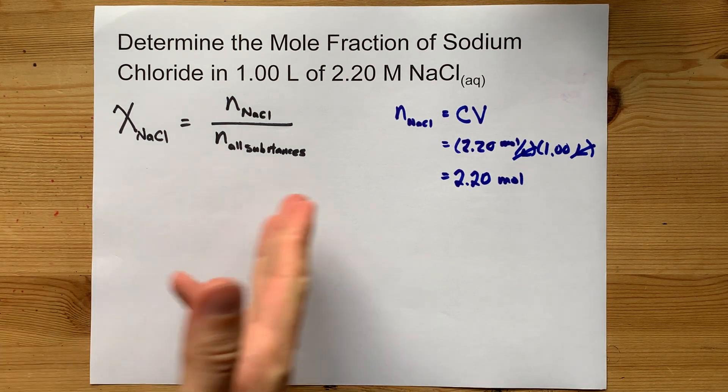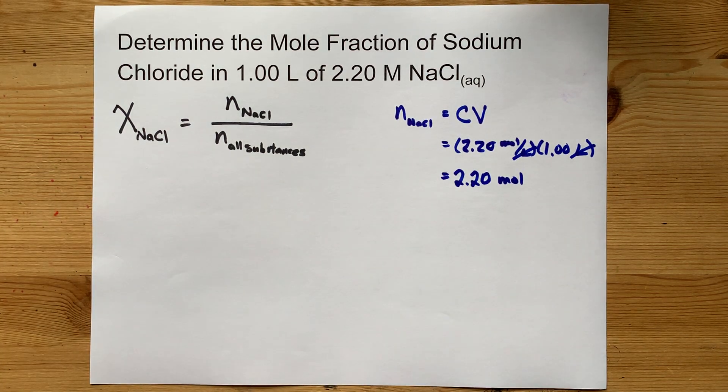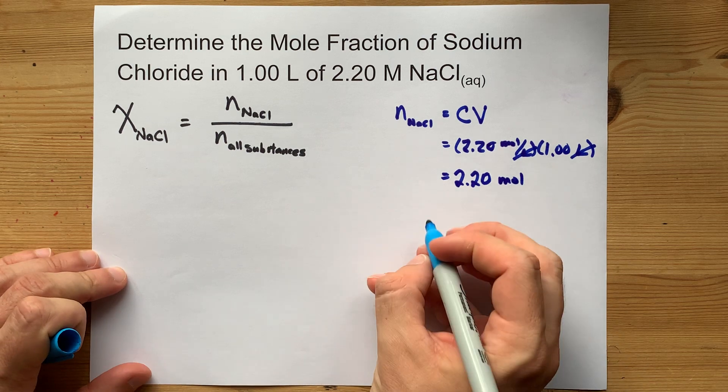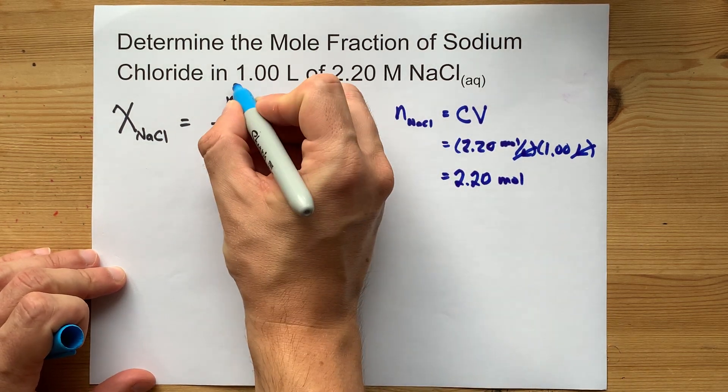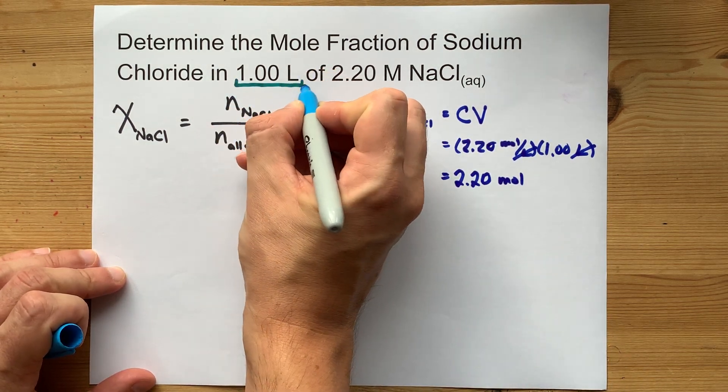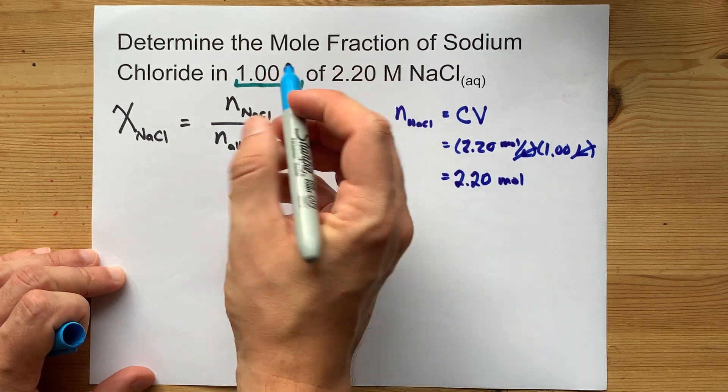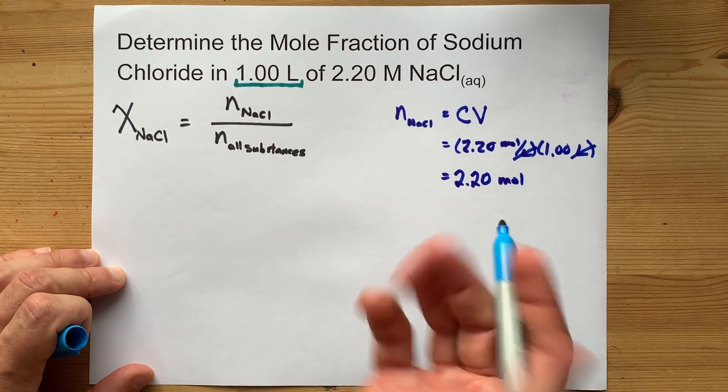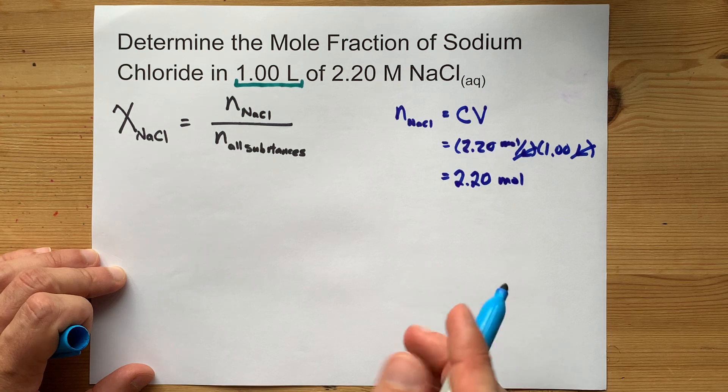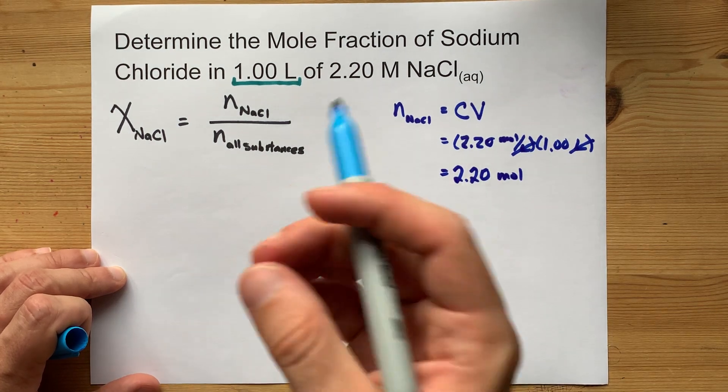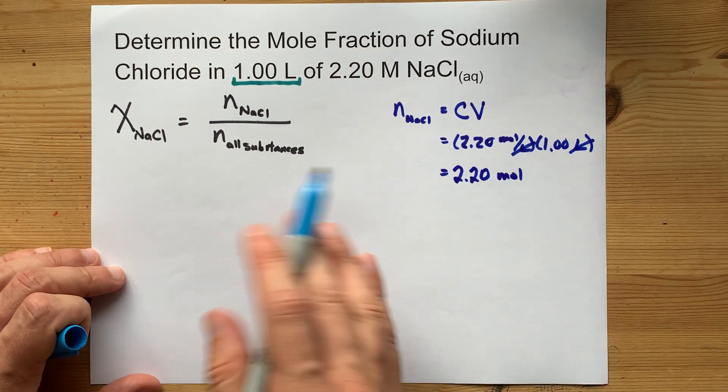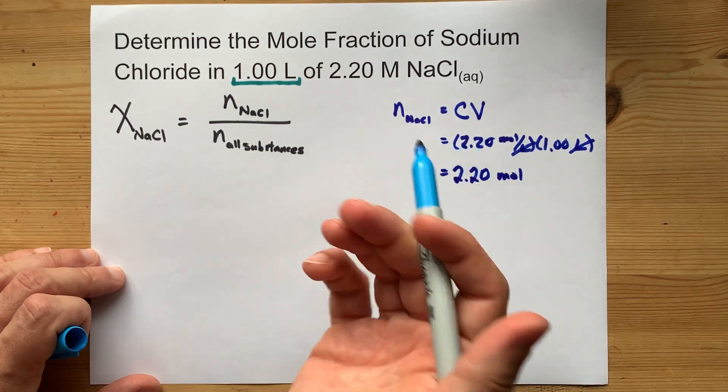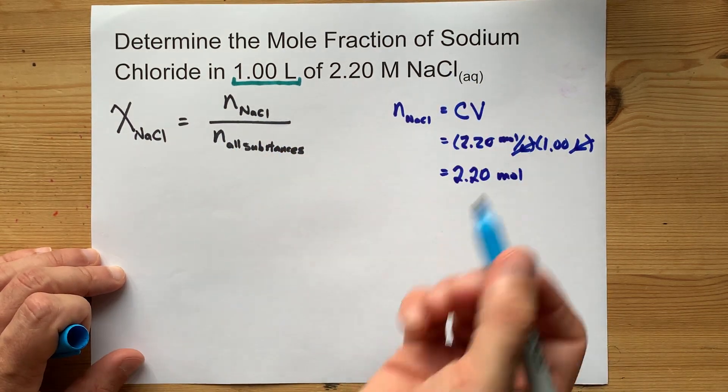But you also need to calculate the number of moles of water that you have. Now, water is going to make up a lot of this solution. You have one liter of basically water with some NaCl mixed into it. Unless you're given the density of the solution, you have no real way of knowing exactly how much water you have compared to NaCl.